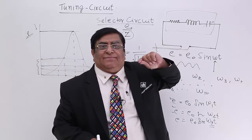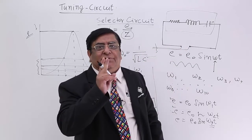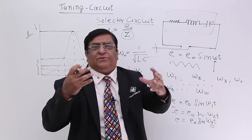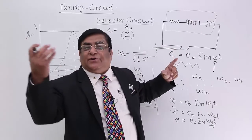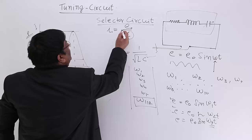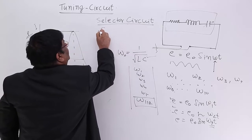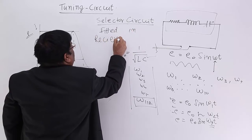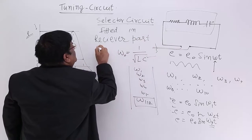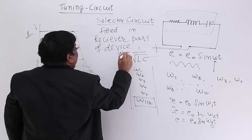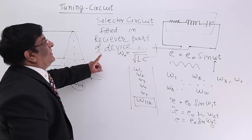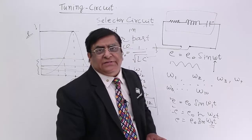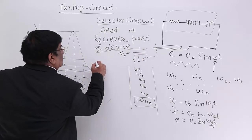This circuit is also called a selector circuit — because it selects one frequency out of many frequencies. In my mobile there are two sections: one for receiving calls and one for sending my voice out. In which part is it fitted? It is for tuning the receiving one, so it is on the receiver part. It is a selector circuit fitted in the receiver part of the device.